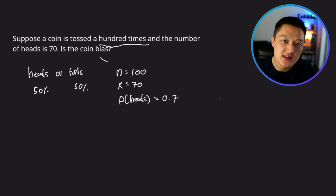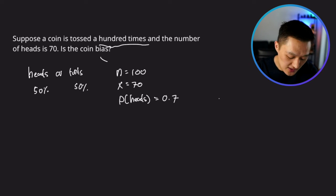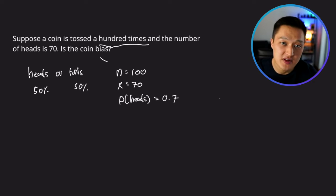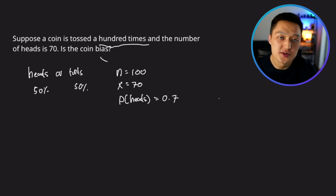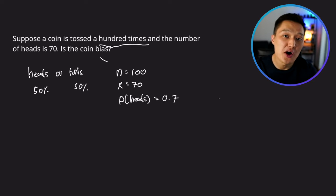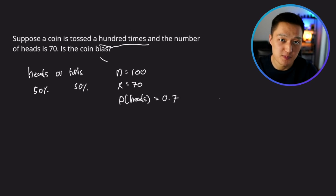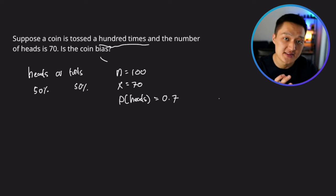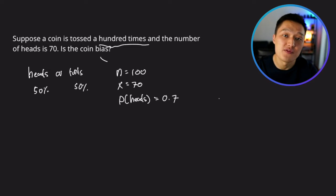If the coin is unbiased and you toss it 100 times, you should get approximately 50% heads. But in this case we have 70%. Using statistical inference, we evaluate whether this observed outcome is an extreme situation compared to what is expected — essentially calculating the p-value and evaluating it against the significance level. If the extreme value crosses that significance level, it is suggestive that there is statistical significance in terms of the coin being biased.